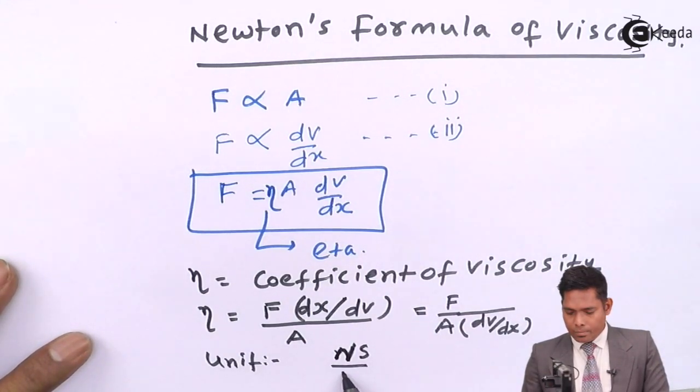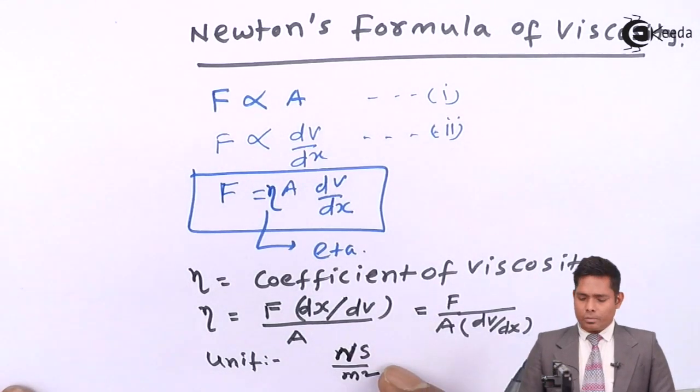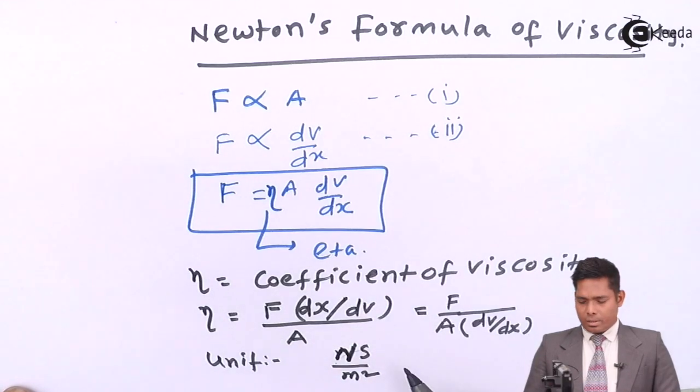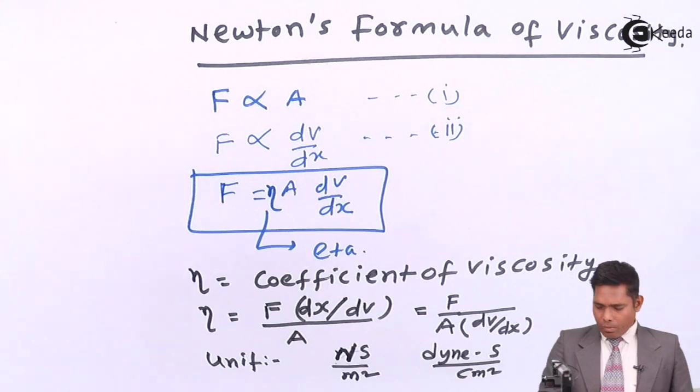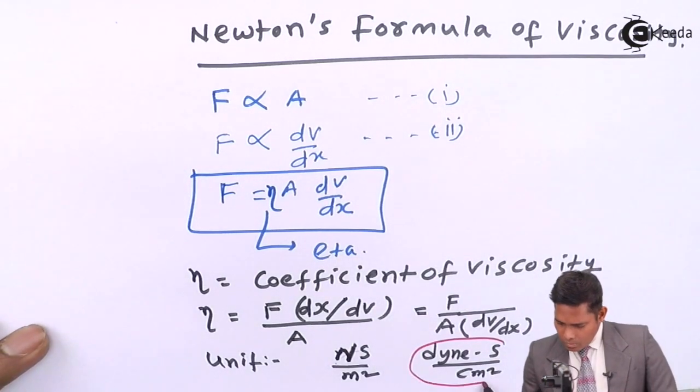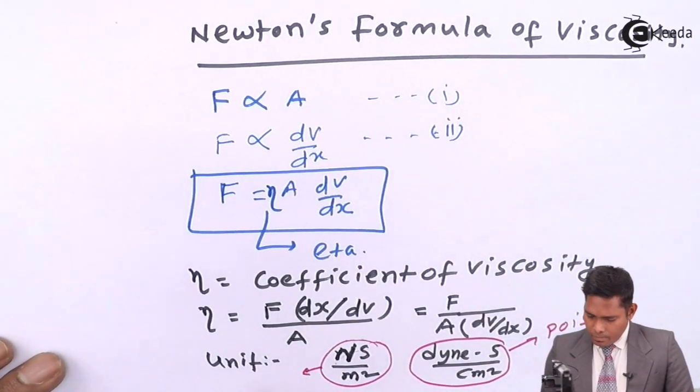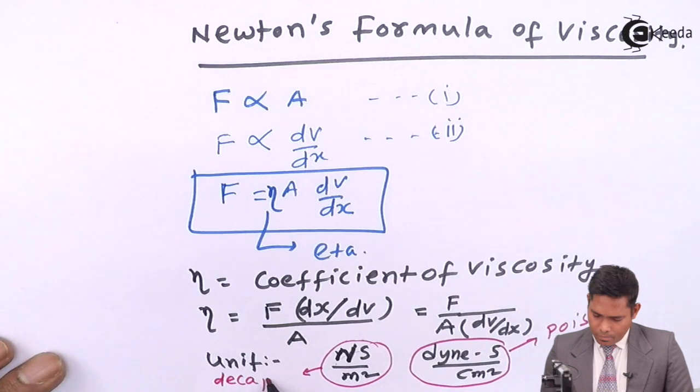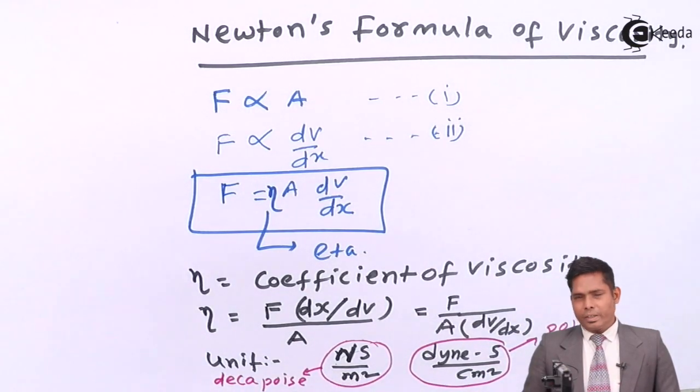Newton meter square. This is called Decapoise, that we will discuss. This is Decapoise. And in CGS, it is dyne second per centimeter square. This one is called Decapoise. And this one is called Poise. So,